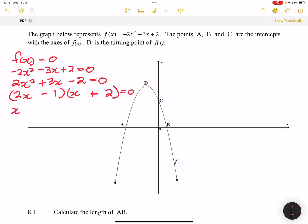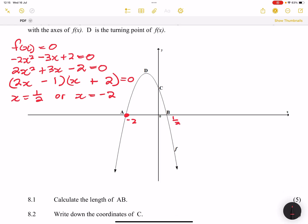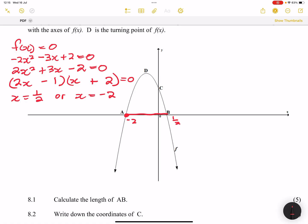And so what do we have? We've got x is equal to 1/2, or x is equal to -2. So that means A is -2, and B is 1/2. But what did we want? We wanted the distance AB, and please note this is just a horizontal line.